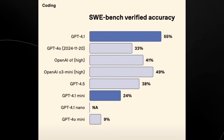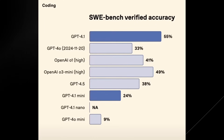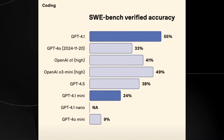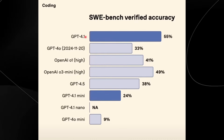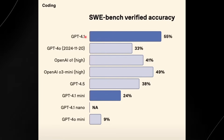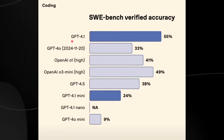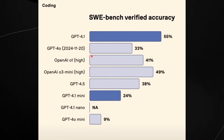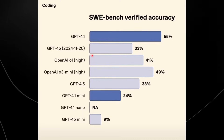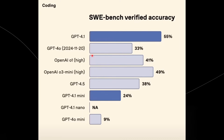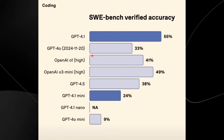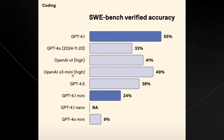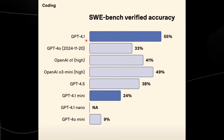We do have to look at one benchmark specifically because GPT-4.1 outperformed every other model on the SWE-bench, which was the main discussion in the AI sphere. GPT-4.1 is significantly better than GPT-4.0 at software engineering, including agentically solving coding tasks, front-end coding, making fewer extraneous edits, following diff formats reliably, and ensuring consistent tool usage. It's even better than OpenAI o3 Mini and OpenAI o1 High, making it a super model for coding.